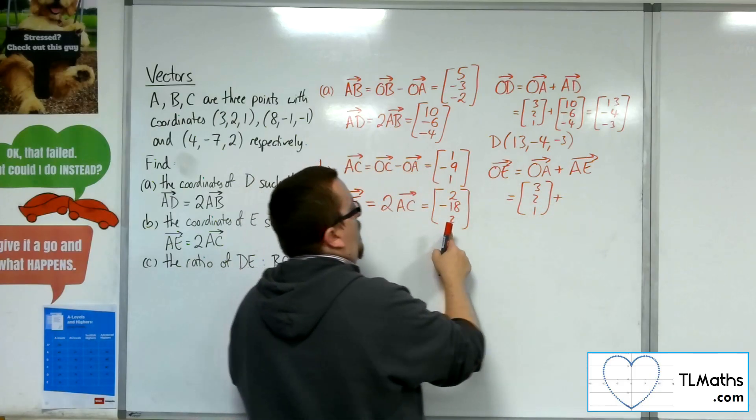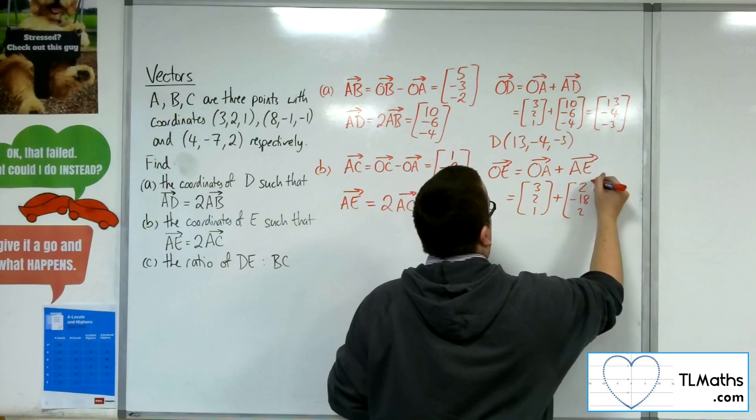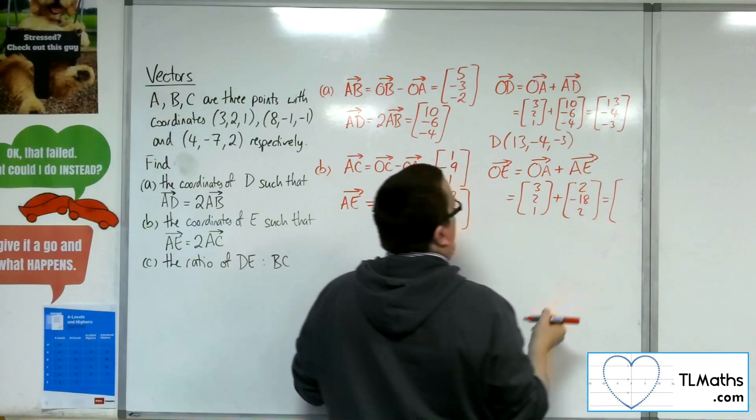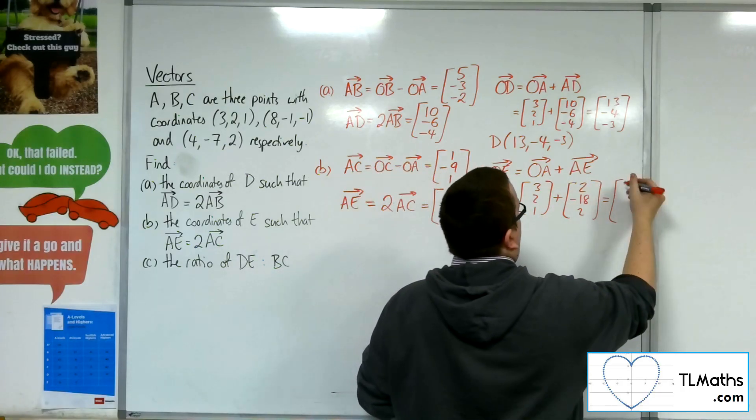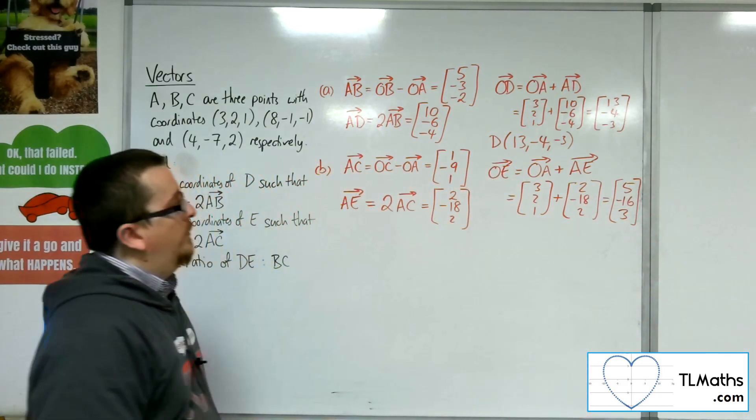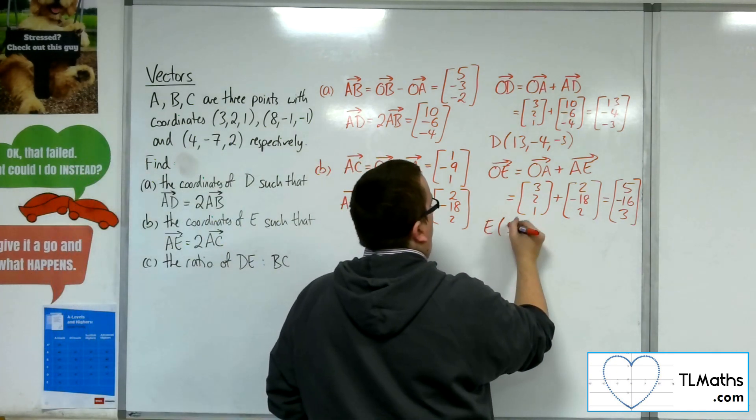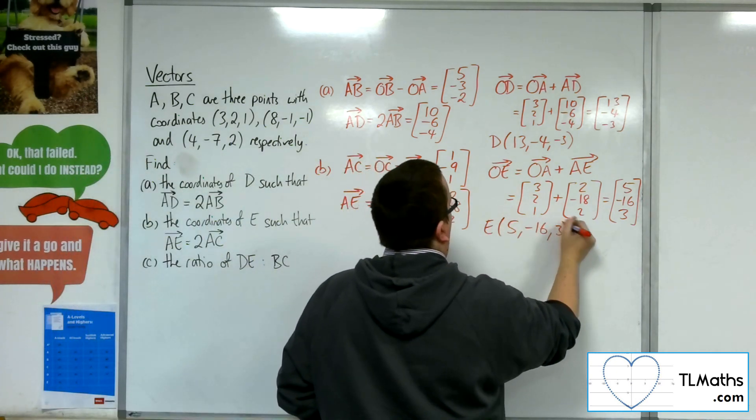AE is 2 minus 18, 2. So OE will have position vector 5, minus 16, 3. Okay, so E will have coordinates 5, minus 16, 3.